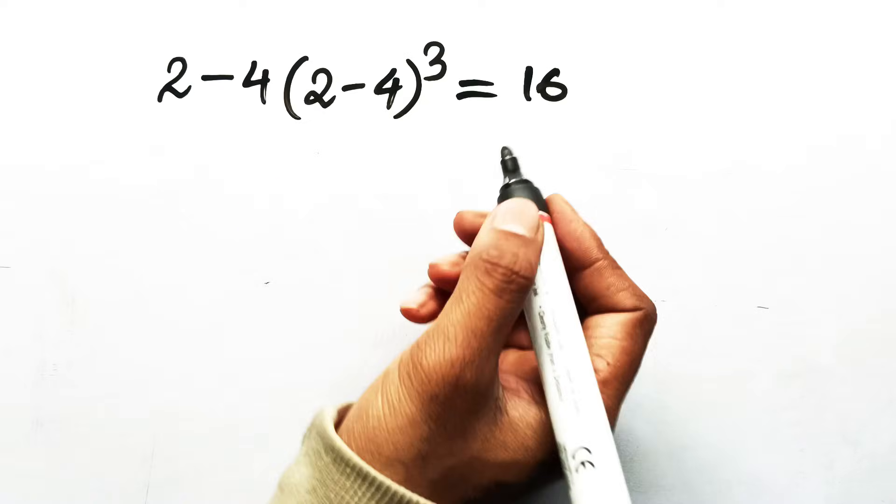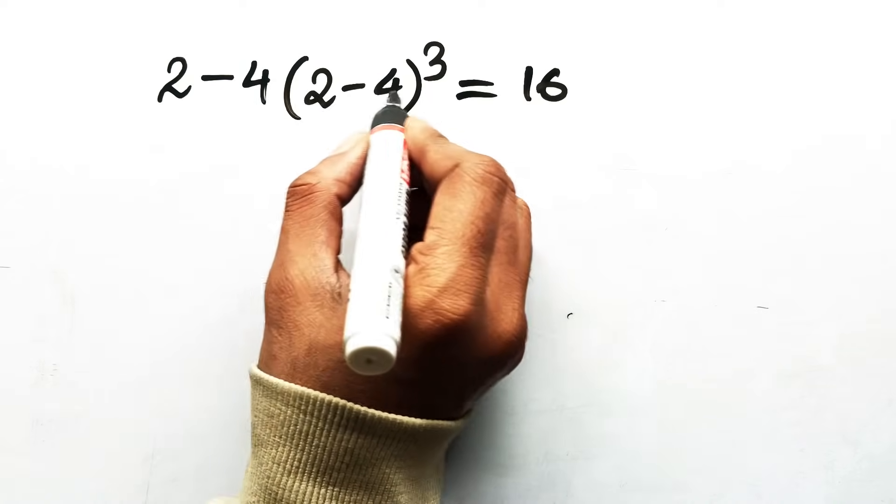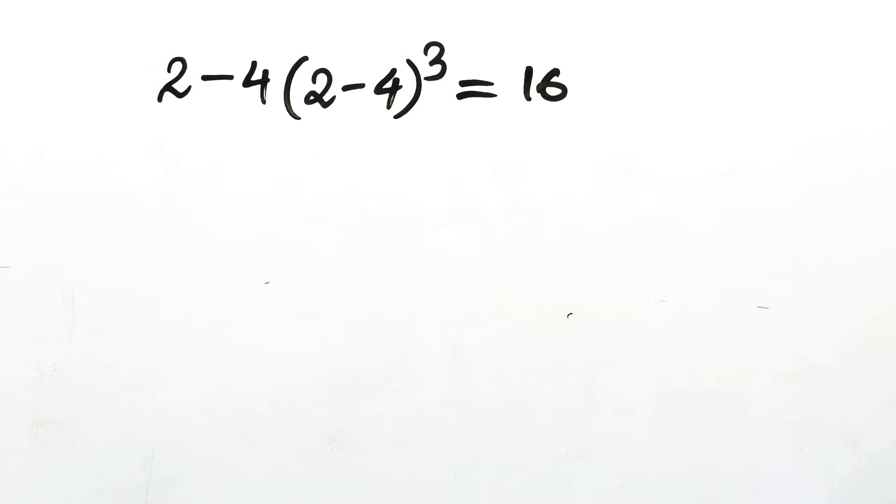So let's look at this expression carefully. 2 minus 4 times the quantity 2 minus 4 all cubed. And I know exactly how most people attack this.